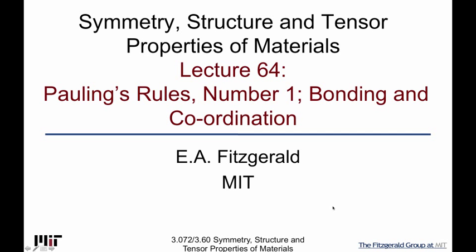Welcome to the first lecture of the third part of our class: Symmetry, Structure, and Tensor Properties of Materials. As we head toward tensor property materials, we want to add atoms. When we go to tensors, we're going to represent a material's properties as tensors — it'll reflect the symmetry of the crystal structures. But before we get there, instead of jumping from symmetry right to tensor properties, we're going to take a detour for a few lectures to show you that now that we have all these symmetries allowing crystal structures, there is a way to add atoms and estimate what compounds would have particular kinds of space groups.